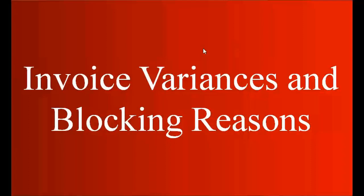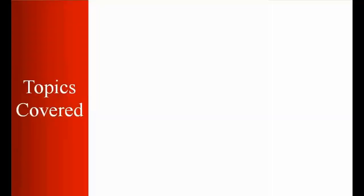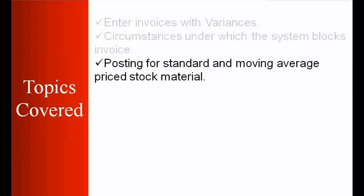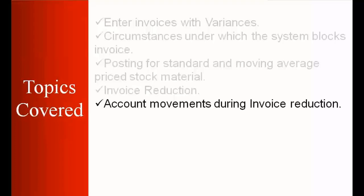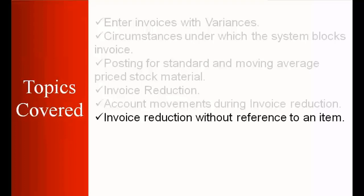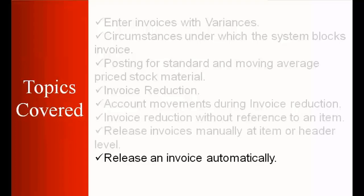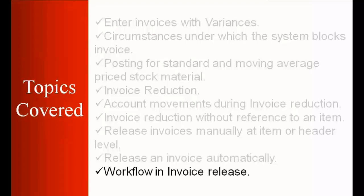Welcome to our next class. Today we'll start the next topic: invoice variances and blocking reasons. The topics we're going to cover are: entering invoices with variances, circumstances under which the system blocks invoice posting for standard and moving average priced stock material, invoice reduction, account movements during invoice reduction, invoice reduction without reference to an item, releasing invoices manually at item and header level, releasing an invoice automatically, and workflow invoice release.